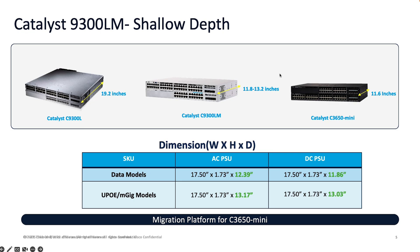Looking at the exact dimensions of the 9300 LM family: the switches are significantly shallower than our 9300L family, ranging from 11.8 to 13.2 inches in depth, making them an ideal fit for tight wiring cabinets, racks, or user spaces where depth of the switch is a concern. The depth shown on screen is inclusive of the power cord retainers as well as the power supply handles.